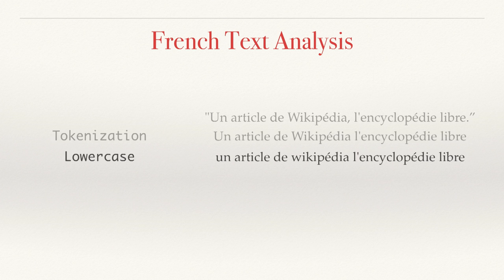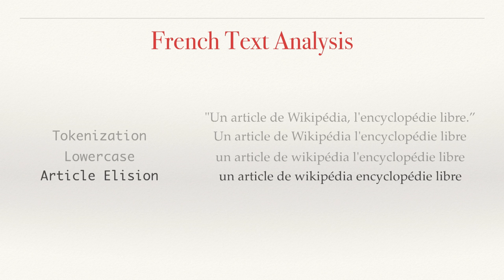Next, we're going to put everything in lowercase, because when we're searching, we don't care about any differences in case. Then we're going to perform a step called article elision. This is not unique to French, but it's one of a handful of languages that does require this step. So here we're going to take the article "le", which has been prepended with the apostrophe, and we're going to strip that off.